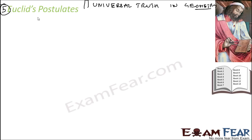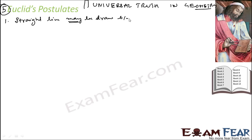We will go through all five postulates. The first postulate is that a straight line may be drawn from any point to any point. Please note the word 'may' — a straight line may be drawn between two points. There are two points; I can draw a curved line, but I can also draw a straight line, that's why there is a 'may.' There is a unique straight line joining two points. The words 'points' and 'line' make it specific to geometry.